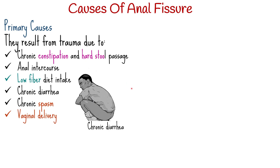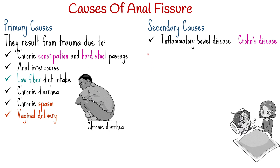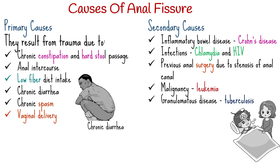Secondary causes are due to underlying diseases such as inflammatory bowel disease like Crohn's disease, infections like chlamydia and HIV, previous anal surgery due to stenosis of the anal canal, malignancy like leukemia, and granulomatous disease like tuberculosis.